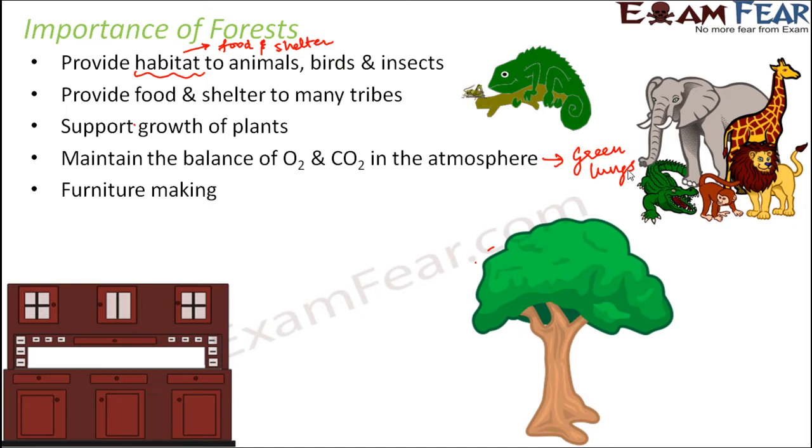Forests can be used as a source of various objects which are useful to human beings. For example, for making furniture, we make use of wood which is obtained from the plants. That's where we talk about seasoned wood furniture, teak wood furniture. These are different types of wood which are obtained from different plants in forests.